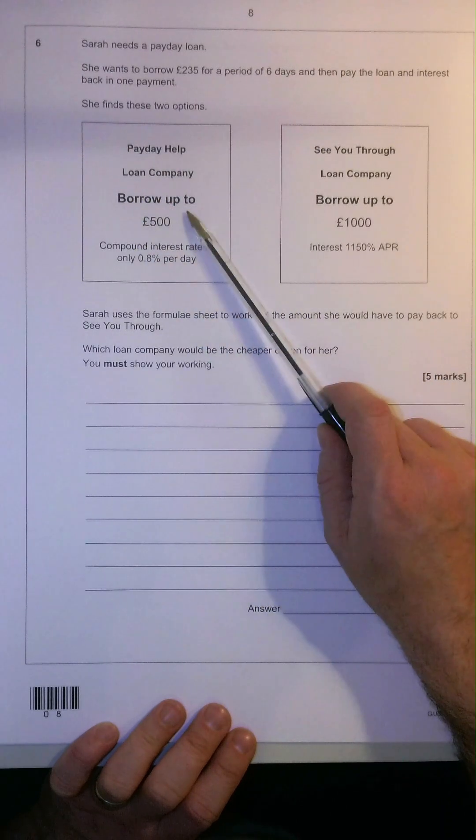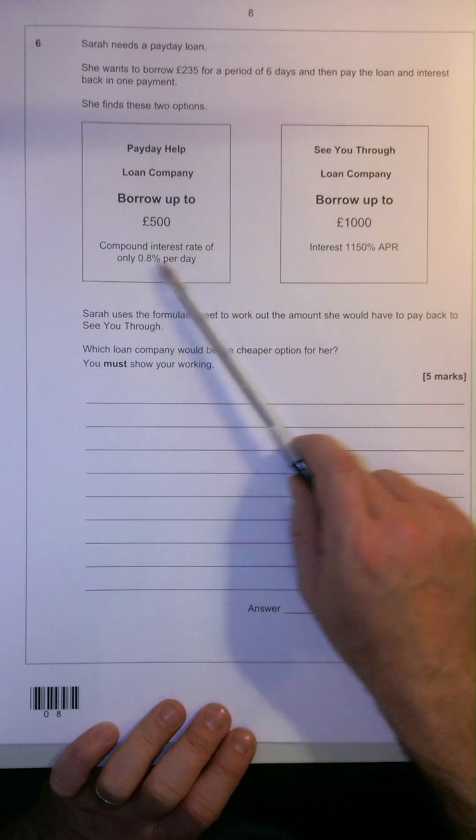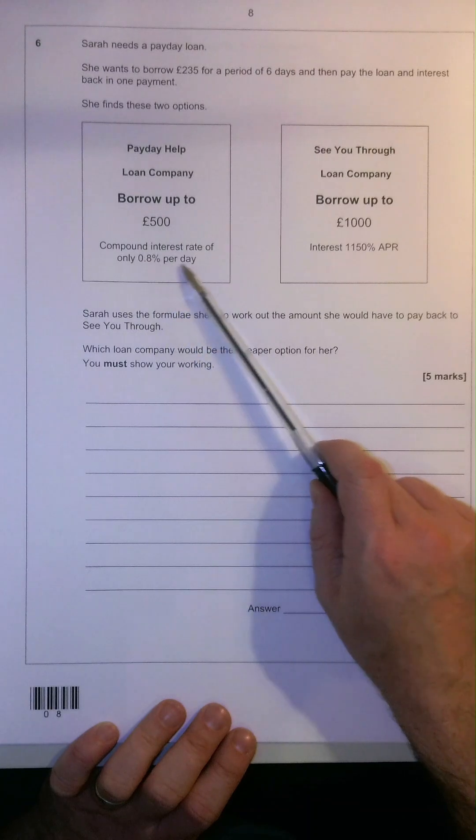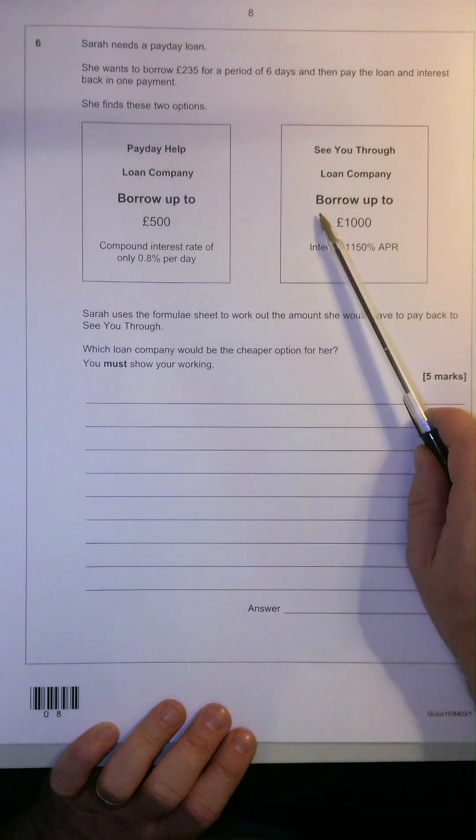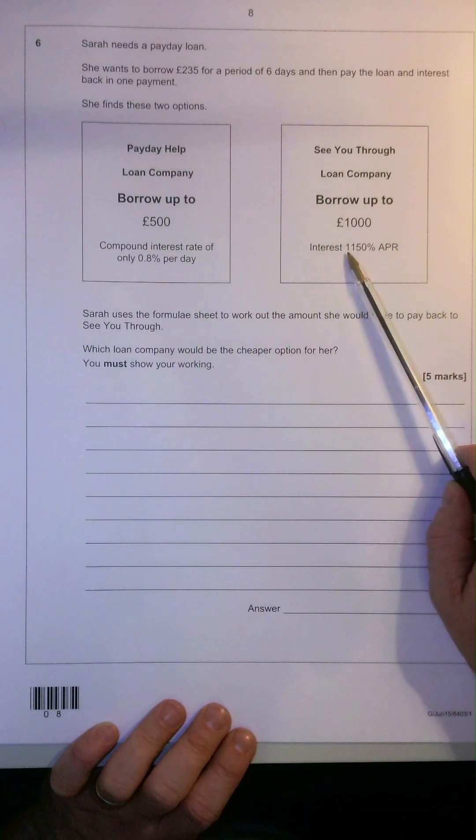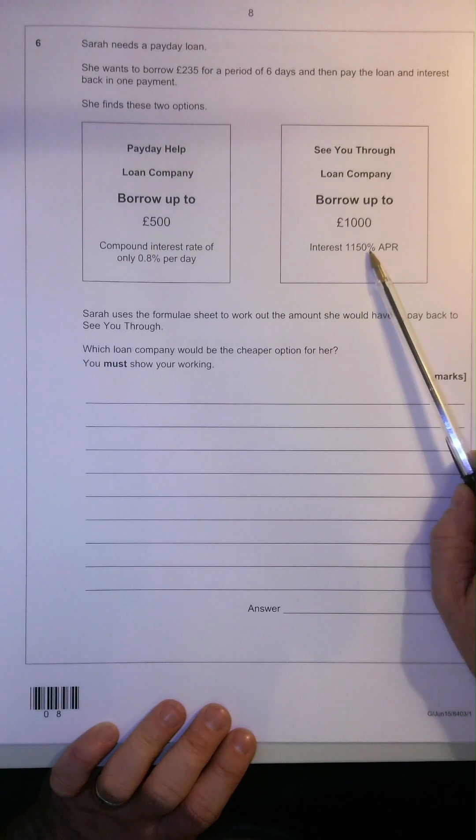Firstly, payday help, borrow up to £500 at a compound interest rate of 0.8% per day. See you through, borrow up to £1,000, interest rate of 1,150% APR.